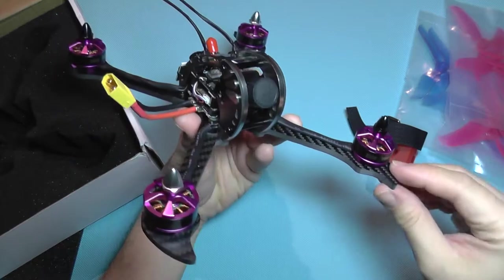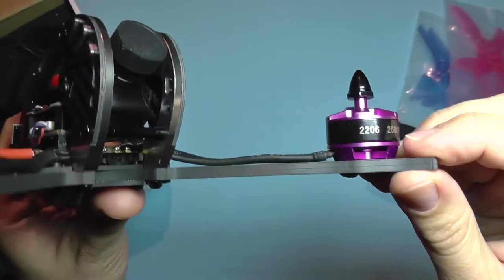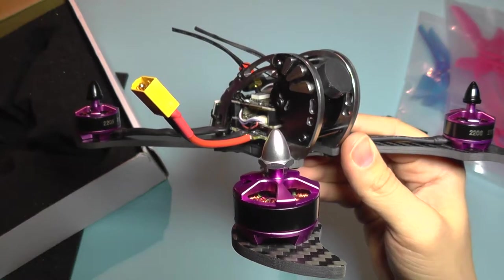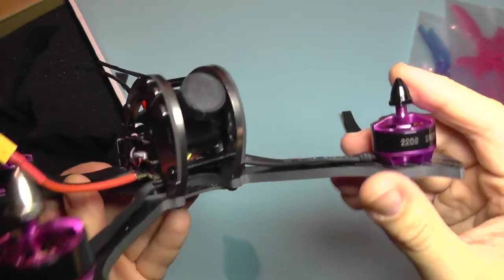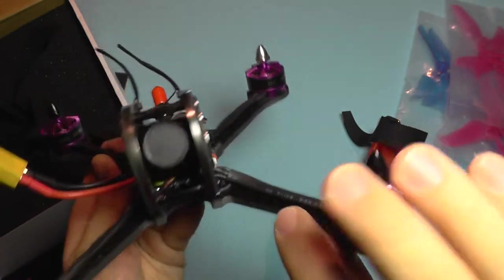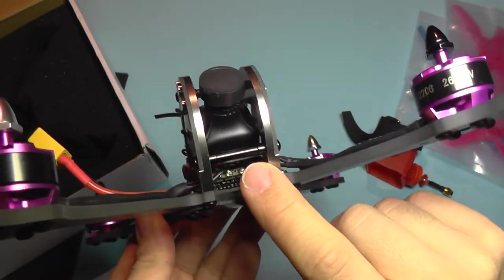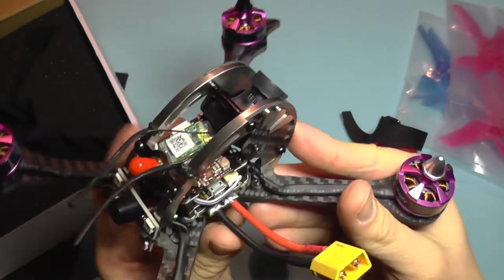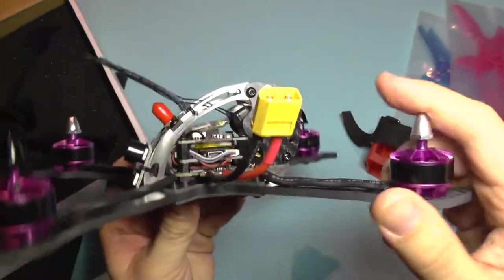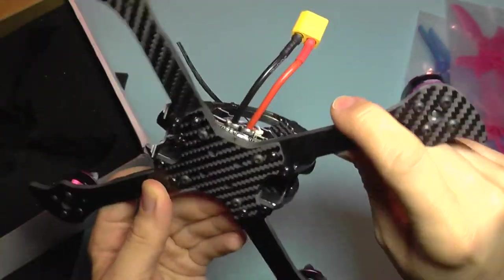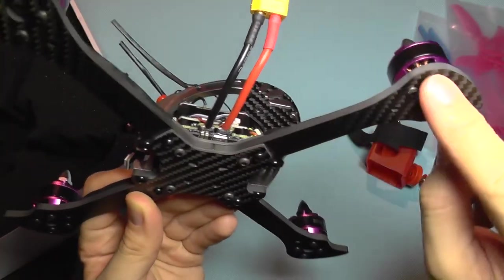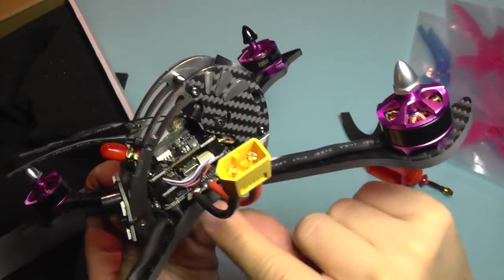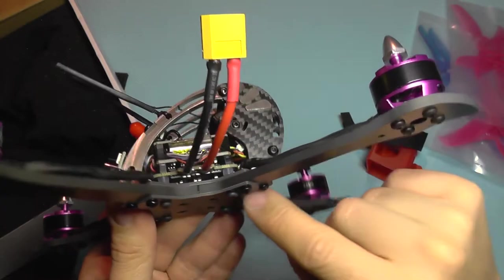This is the quadcopter, it has a very nice build quality with very thick arms. It uses four millimeter thickness for the arms and six or five millimeters for the aluminum parts. It's a combination of metal and carbon fiber and the arms are exchangeable, held together by two thinner carbon fiber plates.